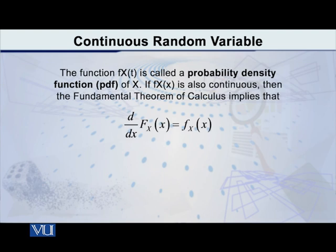If we take the derivative of capital F of X, that gives us small f of X. Small f of X is called the probability density function — it is that mathematical equation which defines our probability distribution.